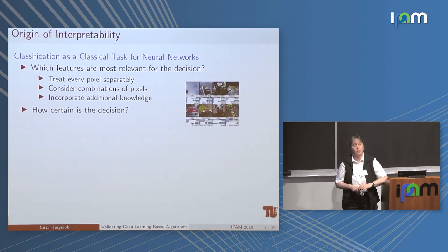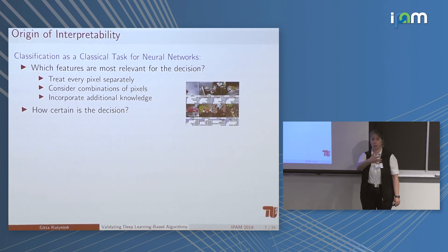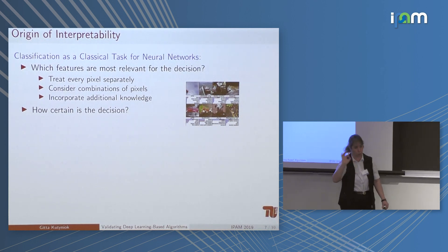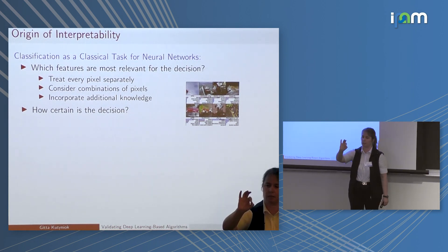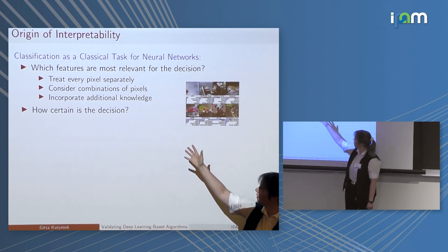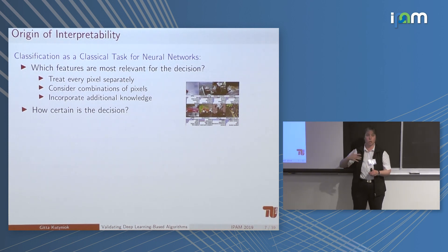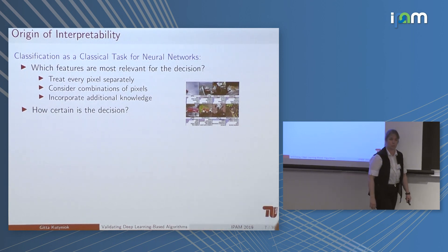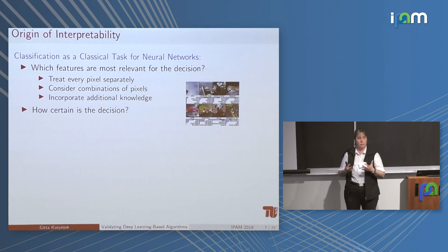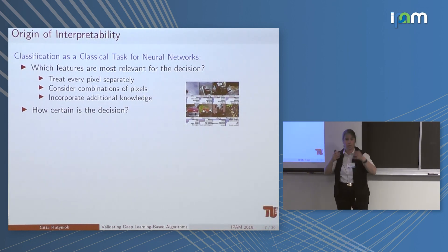Classification is a very crucial and classical task for neural networks. The questions one wants to answer are: we have a decision of our neural network — what features are relevant for this? We can treat each pixel separately, which is what is usually done, but we can also think about combinations of pixels, incorporate additional knowledge, ask about something missing from the image that might be important for the decision, and also ask how certain the decision is.